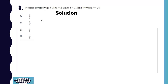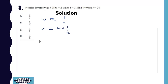Now we have this: w varies inversely as t, so w is equal to a constant k times 1 over t. We substitute the given values of w and t, and this implies that our k is equal to 6.